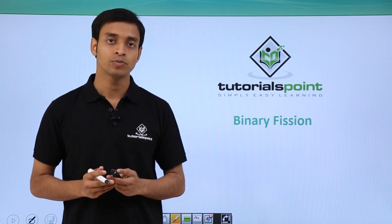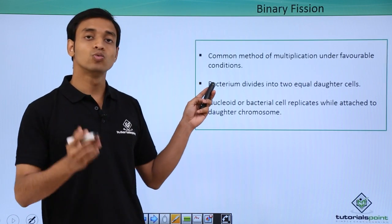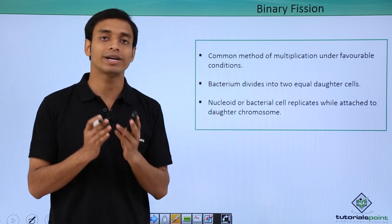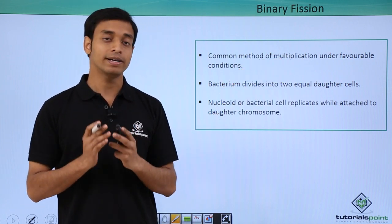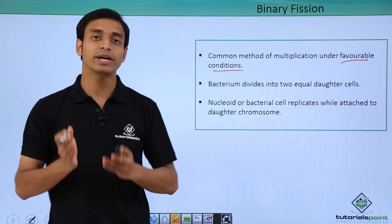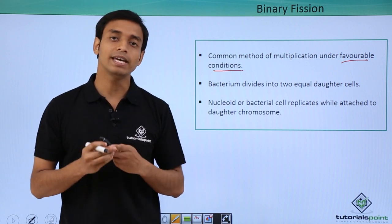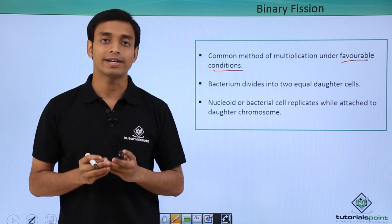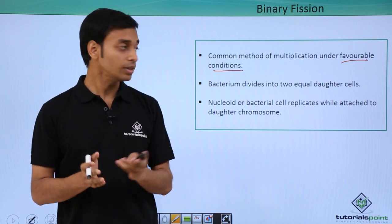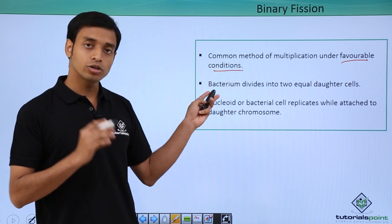Binary fission is one of the most common methods of multiplication which is followed by bacterial cells, but this can only happen under favorable conditions. What do we mean by favorable conditions? That means if conditions like pH, temperature, and all other environmental factors are in the optimum range, that is a good range, then only this type of reproduction can take place.